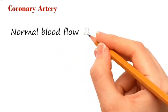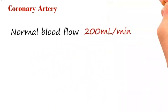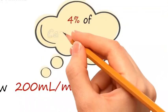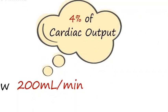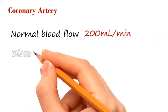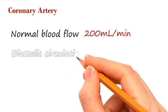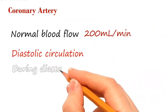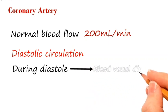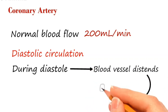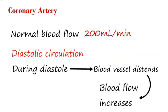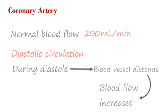The normal blood flow through the coronary artery is 200 milliliters per minute, which is about 4% of the total cardiac output. The coronary artery gets filled during the diastole of the cardiac cycle — during diastole, the blood vessels dilate, leading to an increased blood flow through these vessels.